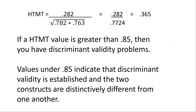We have our average heterotrait correlation of 0.282 in the numerator, divided by the square root of the product of the two monotrait averages, giving us 0.282 divided by 0.7724, which yields a heterotrait-monotrait ratio of correlations of 0.365. If your HTMT value is greater than 0.85, you have discriminant validity problems — the two constructs are not distinguishing from one another. Values under 0.85 indicate discriminant validity is established.